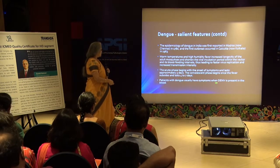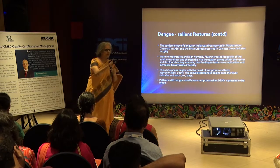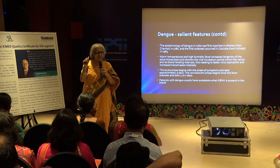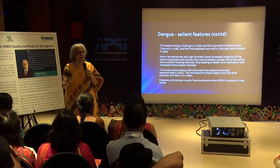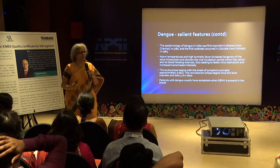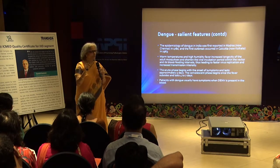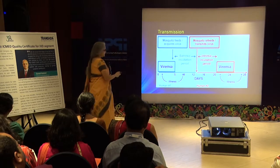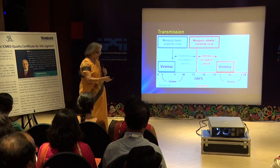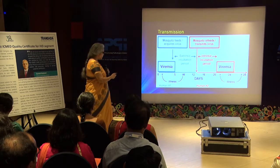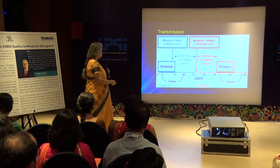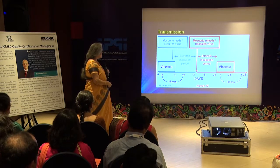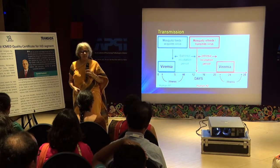The acute phase starts with the onset of symptoms, and the convalescent phase is about five to seven days later. Patients with dengue usually have symptoms when dengue is present in the blood. So when you have a symptomatic patient and you are clinically suspecting dengue, what test should you ask for? Virus-specific tests.